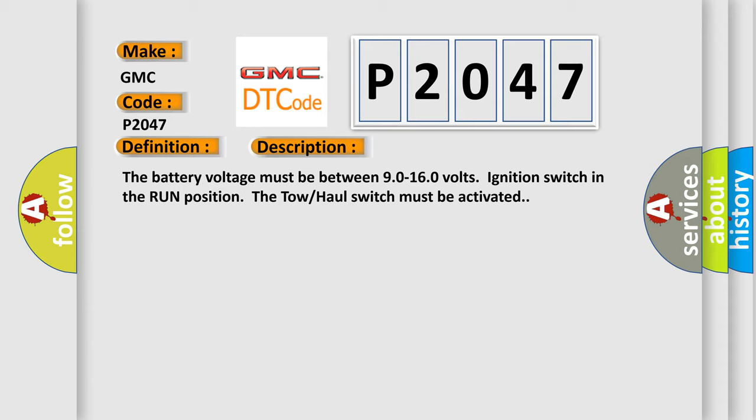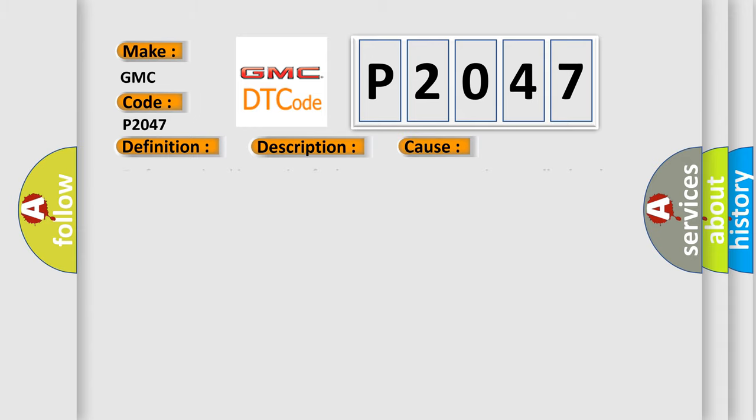This diagnostic error occurs most often in these cases. Perform a visual inspection for loose or poor connections at all related components. Refer to testing for intermittent conditions and poor connections in wiring systems.